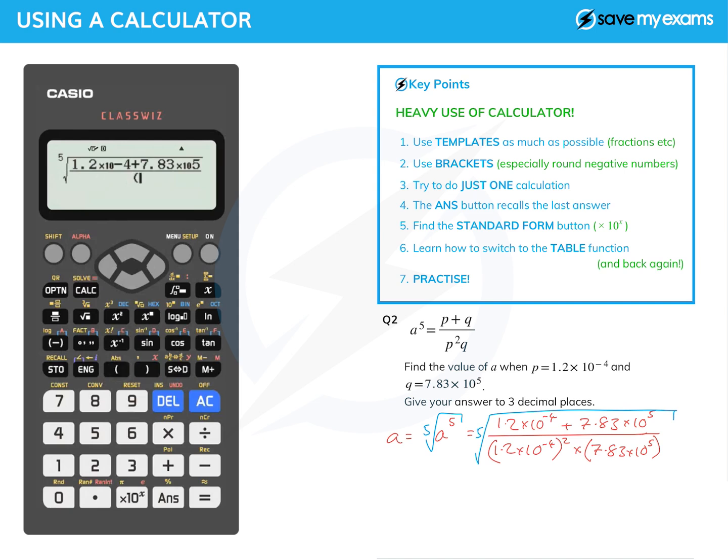Go down to the bottom and put this in a bracket: 1.2 times 10 to the power of minus 4, close the bracket, x squared, and then times 7.83 times 10 to the power of 5, close the bracket. If you're not sure you've done it right, you can use your arrow keys to move around it to have a look. It all looks fine to me, so I'm now going to press equals.